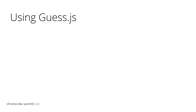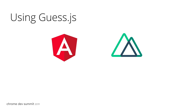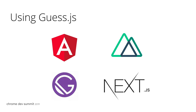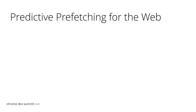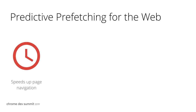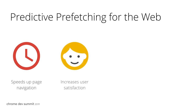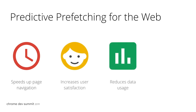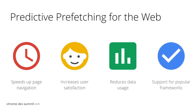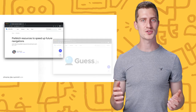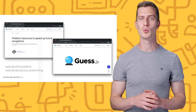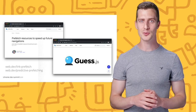Today you can use Guess.js with Angular, Nuxt.js, Gatsby, and Next.js. The important takeaways are that predictive prefetching can speed up page navigation and improve the user experience. By doing so, it will increase users' satisfaction and reduce their data usage. If you're using Angular or a popular React or Vue meta-framework, you can take advantage of Guess.js today. You can learn more about Guess.js and predictive prefetching on web.dev. Thanks for watching.